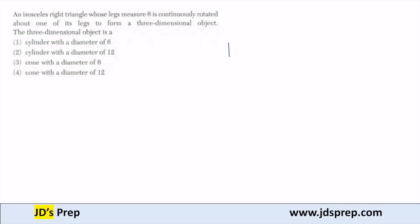So let's imagine I have an isosceles right triangle, so let's draw that. And what I know is that the legs measure 6, and because it's isosceles, both of the legs are in equal measure, so 6 and 6.